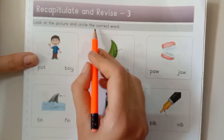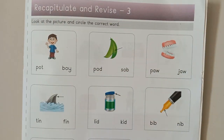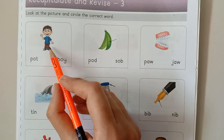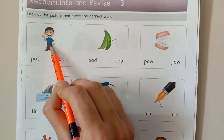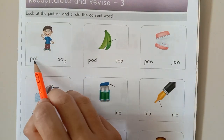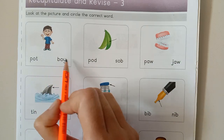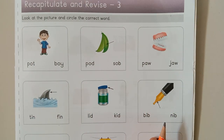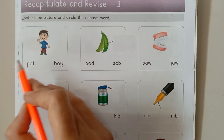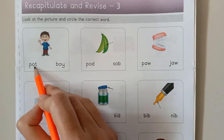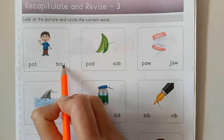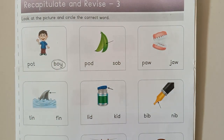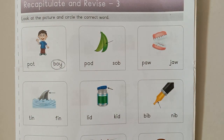Look at the picture and circle the correct word. First we see the picture and after we circle the correct word. Which picture is this? This is a boy. How to write boy? P-O-T, pot, and B-O-Y, boy. You have to circle the correct one.